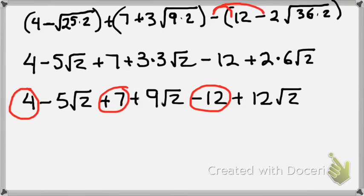So what's 4 plus 7? 11. 11 minus 12, negative 1.